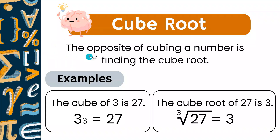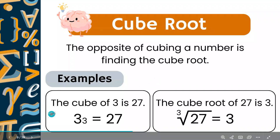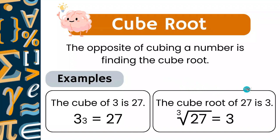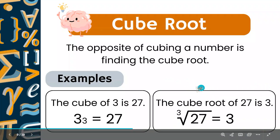Now let's look at cube roots. The opposite of cubing a number is finding the cube root. For example, 3 cubed is 27 because 3 times 3 times 3 is 27. So the cube root of 27 is 3. You can identify a cube root by the small 3 hanging over the radical symbol. If there's no number there, it's a square root; if there's a 3, it's a cube root.